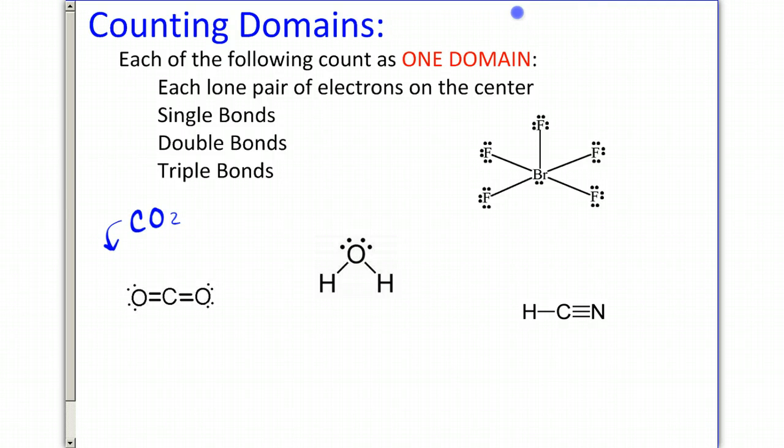The Lewis structure for CO2, you have your center atom, and I'm going to start here, and I'm going to say that the carbon attached to this oxygen is one domain, and then the carbon attached to the other oxygen is another domain. So I have two domains here, one going this way, one going this way. This one has two domains around the center atom.